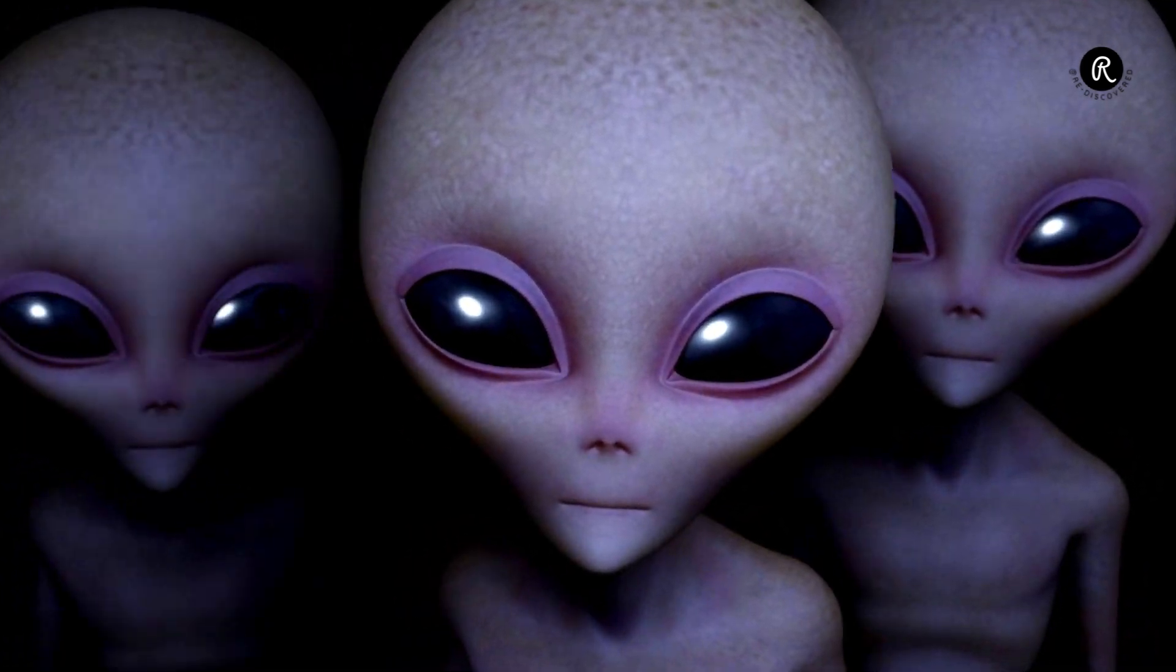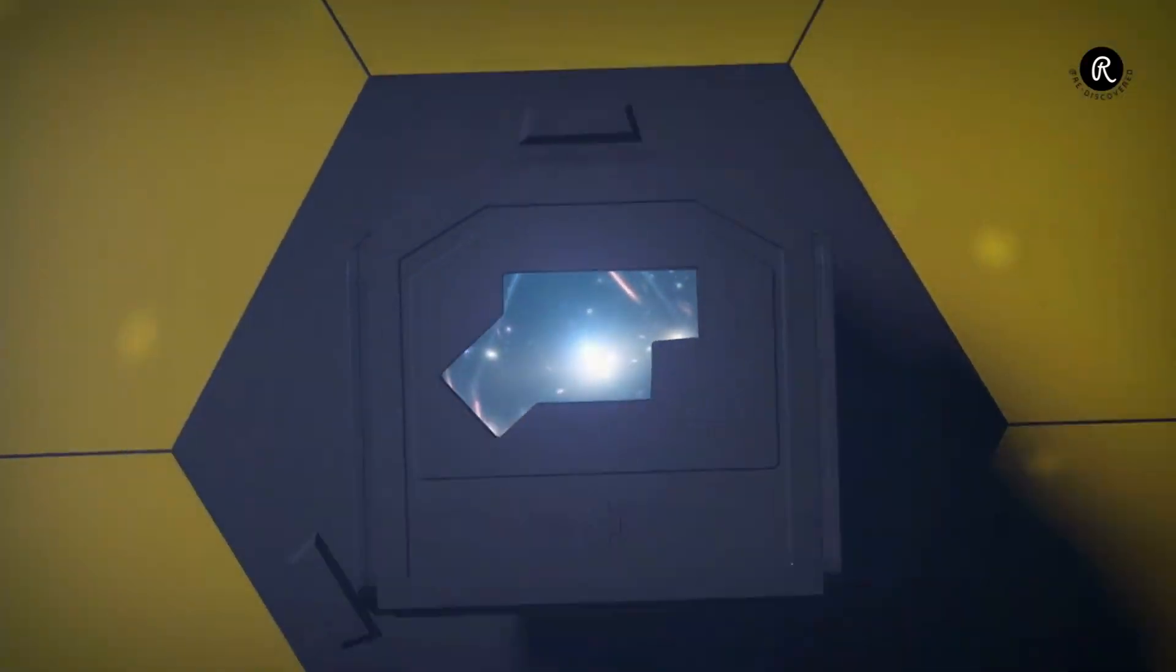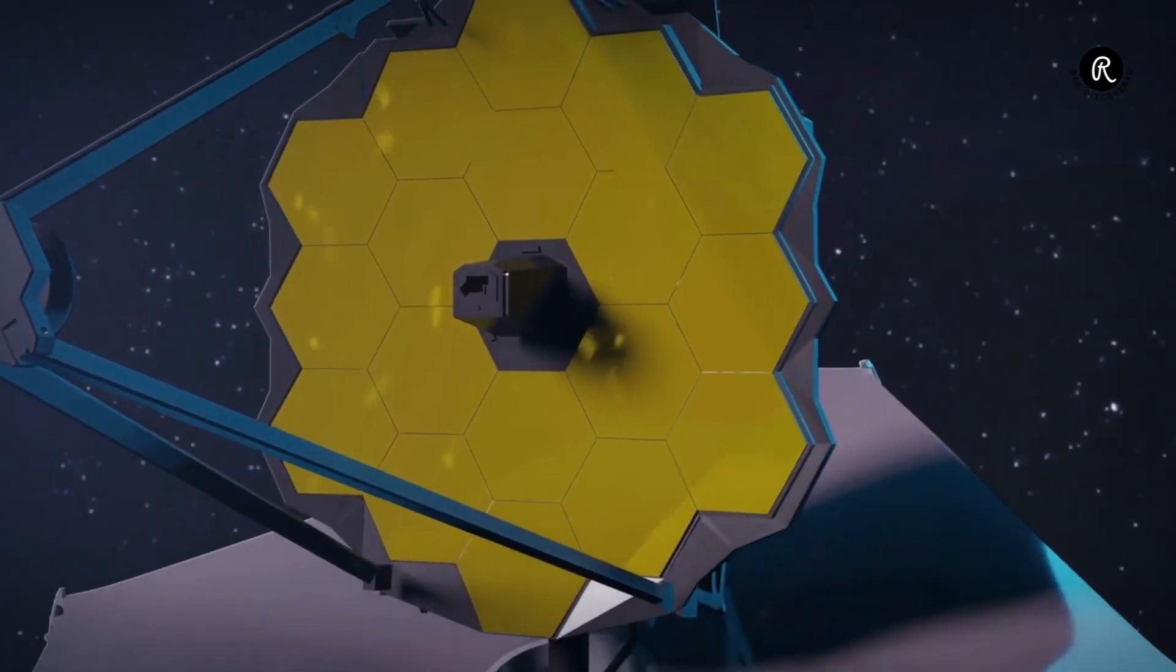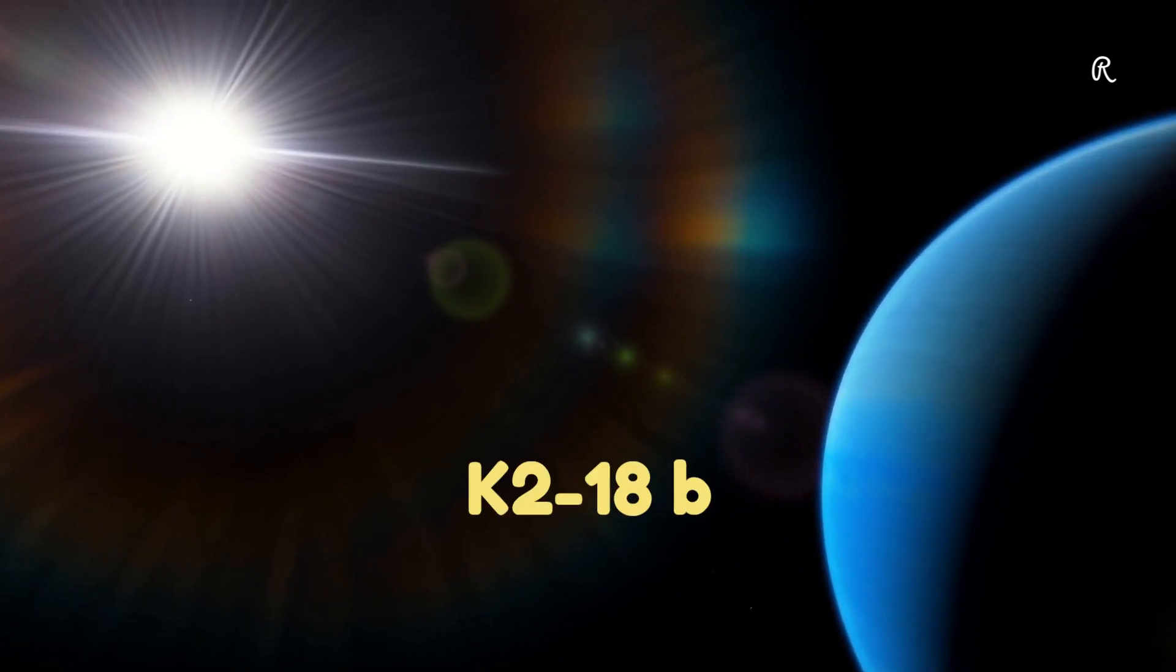Our search for extraterrestrial life just got way more exciting. The James Webb Space Telescope has detected a possible sign of life on a faraway exoplanet K218 b.